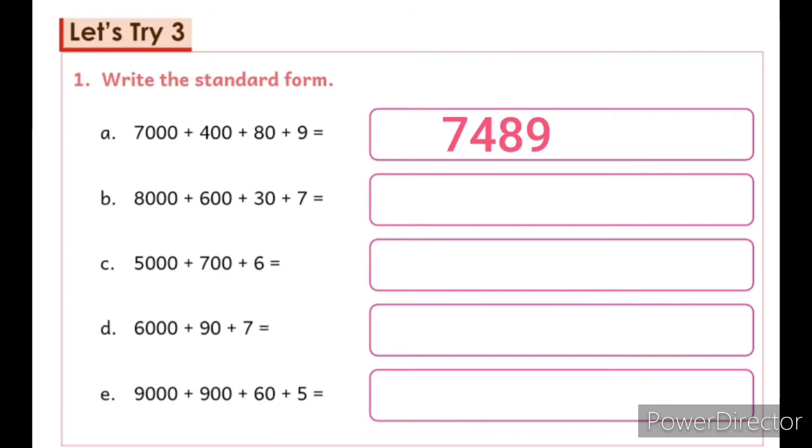Dear Students, to write the Standard Form of any number, write the short form of the number. So, the Standard Form of 7000 plus 400 plus 80 plus 9 is 7489.